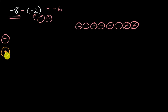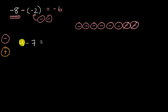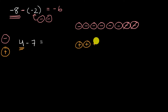Now let's try something that might seem a little less intuitive. There are many ways to approach this, and maybe the number chip technique will resonate with you for building intuition. Let's say we want to figure out four minus seven. Four is a positive number, so I'm going to use four positive number chips to represent it — one, two, three, and four positive number chips.